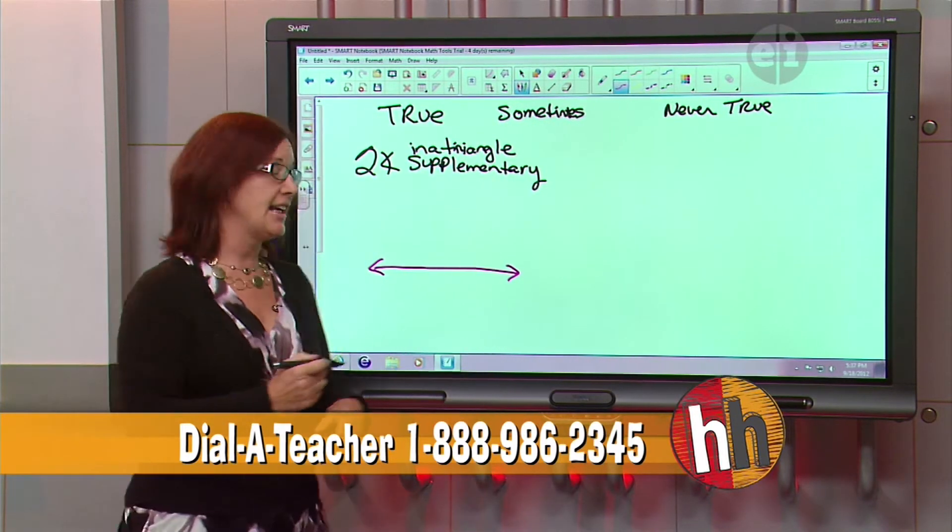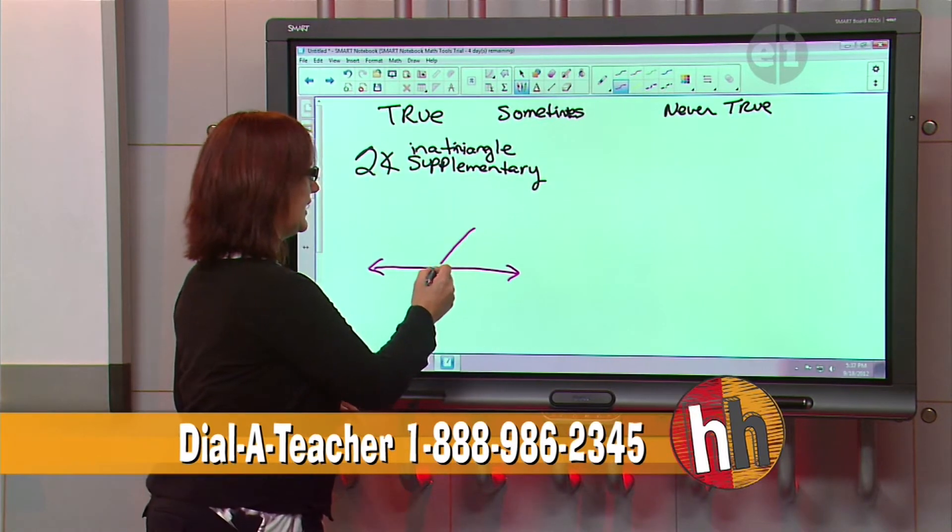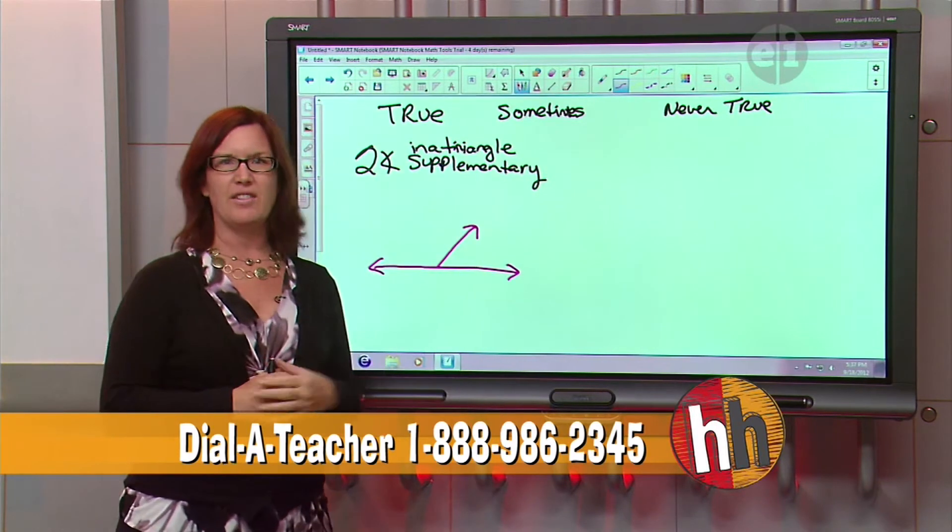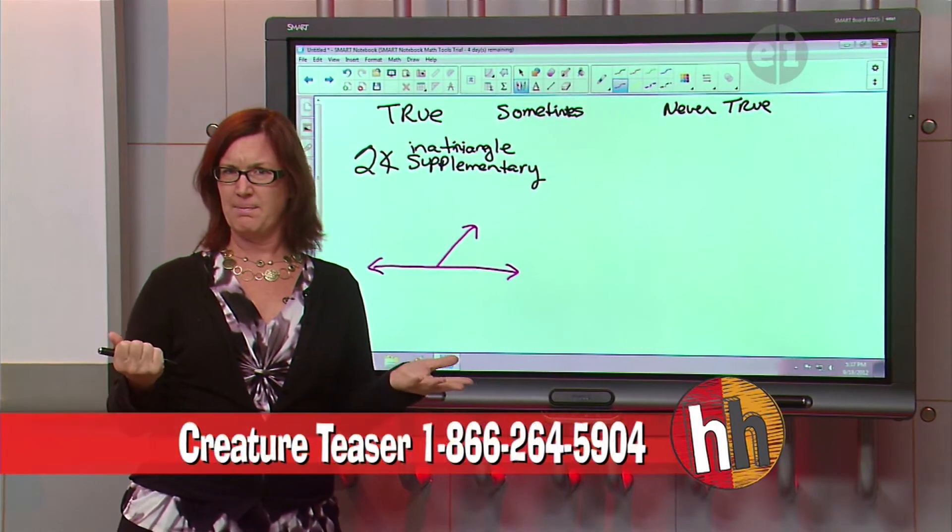But it's a pair of angles that add up to 180. So if I cut this right here, do you see how you have two angles that when you put the two pieces together will make a straight line of 180. Does that make sense? Yes.